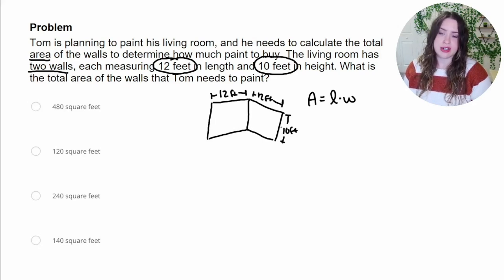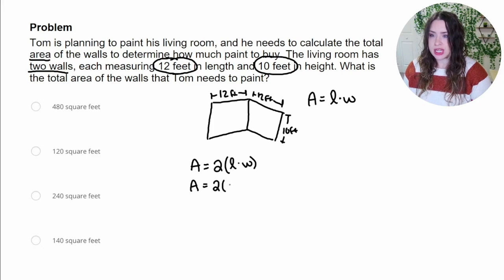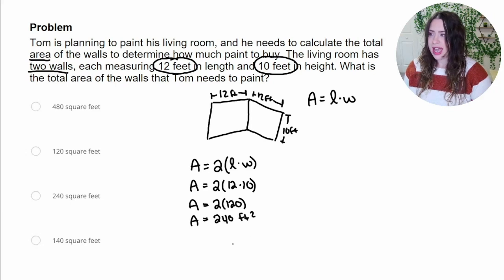And so we are going to have to use this formula and those dimensions. Now, because these two walls are identical, it's going to be easier for us to do the area is two times that length and width. If they were different dimensions, then we would just have to do the two separately and then add them together. So in this case, that's going to be two times 12 times 10. And 12 times 10 is 120. And then we are doubling that for the two walls. So we're going to get 240 square feet as our answer, which is right here.